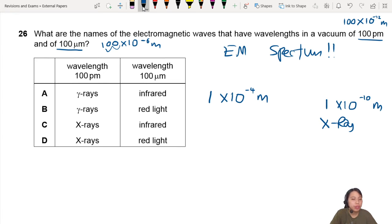And the other one is a little bit longer than visible light. So longer than visible light will be infrared, somewhere in that zone.